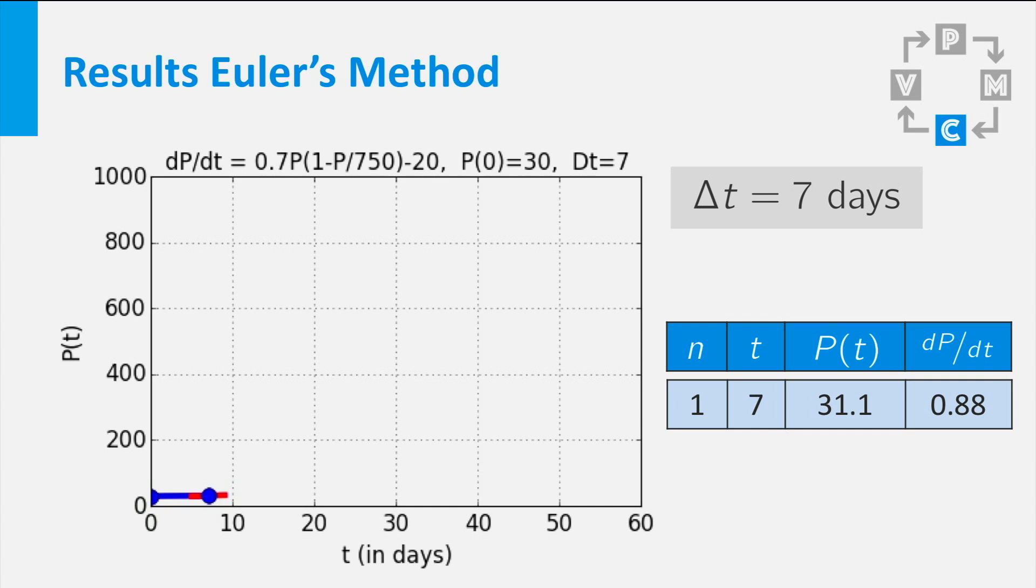The tangent line is still almost flat. Now we can estimate the value of P at t equal to 14. After two weeks, P is estimated as 37.3 fish. Another derivative, the slope is increasing a little.